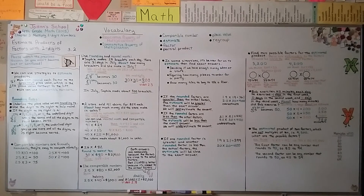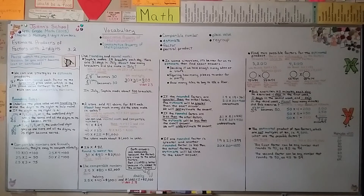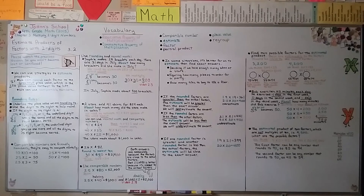In our next lesson, 3.3, we're going to use area models and partial products to multiply two-digit numbers, so we'll be working with grid paper. I hope to see you there — have a really great day, bye!